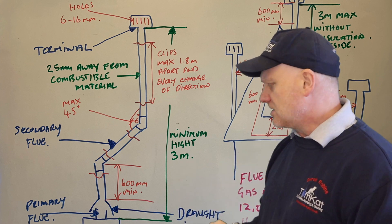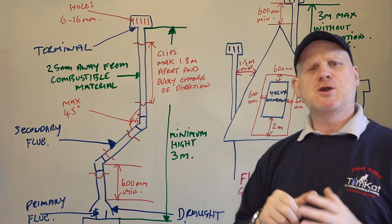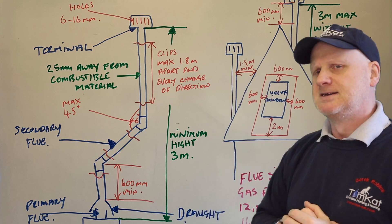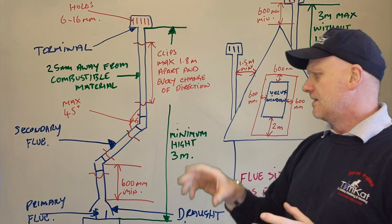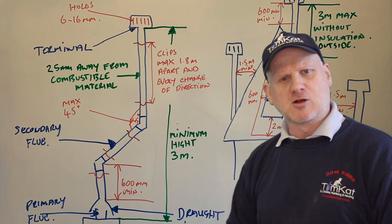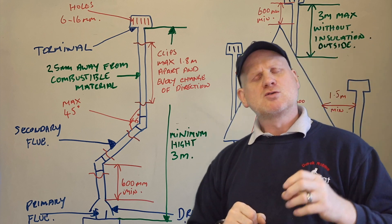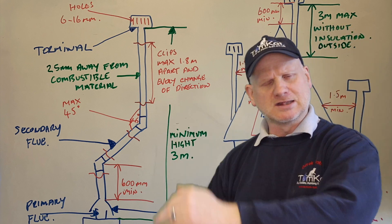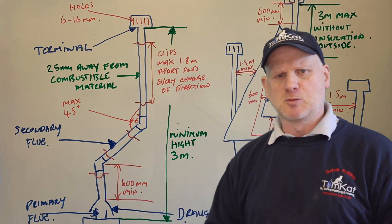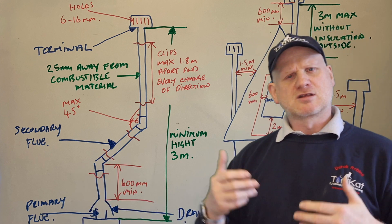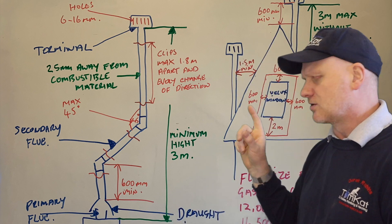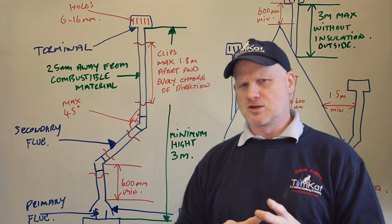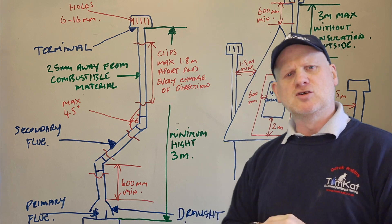For the secondary flue: you must have a minimum of 600mm from the draft diverter to the first bend. After that, flue elbows cannot have more than a 45-degree angle — we cannot have horizontal lengths or 90-degree elbows, as this causes problems with pull and condensation.